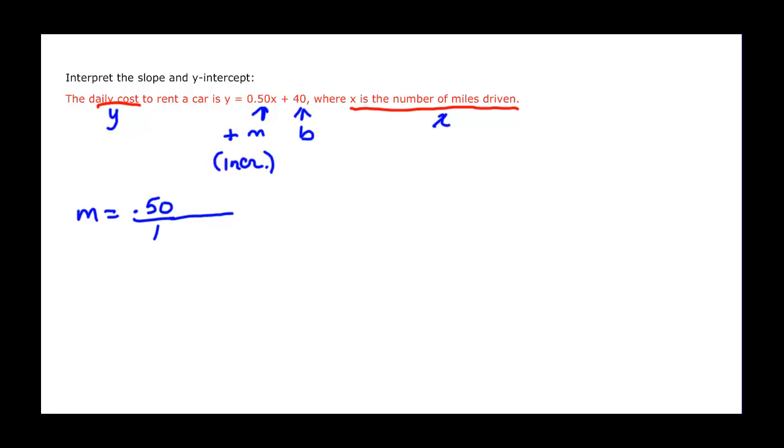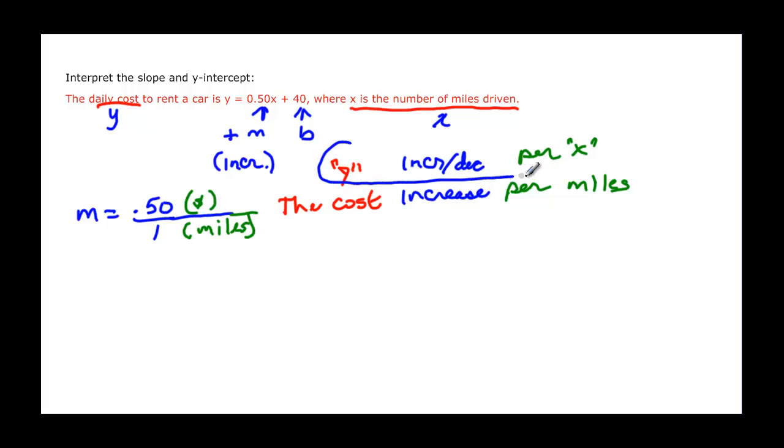So when I interpret here, I'm going to say 0.50 cost, which is going to be in dollars, and one is going to be miles because the x's are in miles. So interpreting then, we say that the cost, that's the y, and then we said it's going to increase because it was a positive slope. Okay, so we either say increase here or we say decrease, and then we say per, and then it's the x. And in this case it would be miles. So this would be our interpretation formula sentence.